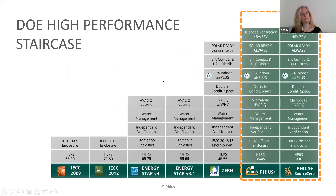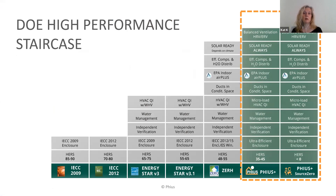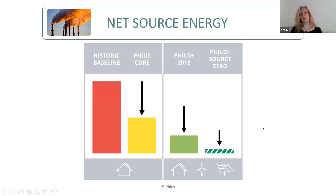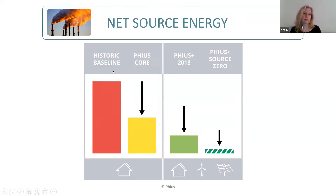We aligned initially with the Zero Energy Ready Home, then they incorporated us into their high-performance staircase all the way to zero, with FIAS Plus so zero being like the highest certification. In 2018, we essentially thought that things were moving much slower than they actually ended up moving, and we came up with a tiered approach with FIAS Plus 18 landing in between the original passive building standard and the net zero or source zero home. In 2021, we've done away with that as I mentioned, and Lisa will talk about this in more detail.